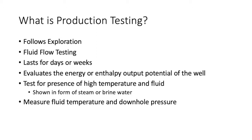Production testing is the step in well siting that follows the exploration phase. This phase includes taking production measurements to calculate and estimate the expected flow rate and energy generation potential of the well. This can last for days or weeks depending on the well size and how difficult it is to start flow. The test evaluates the energy or enthalpy output potential of the well, tests for high-temperature fluid, and measures the fluid temperature and downhole pressure.